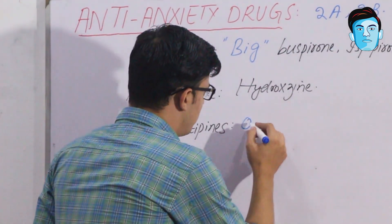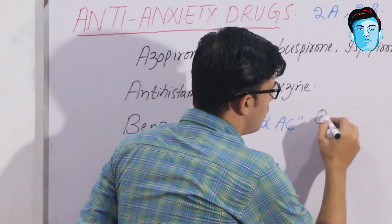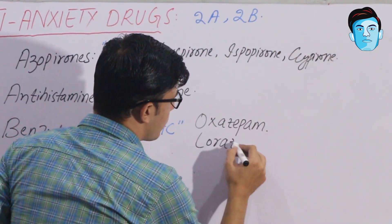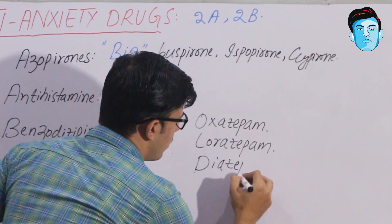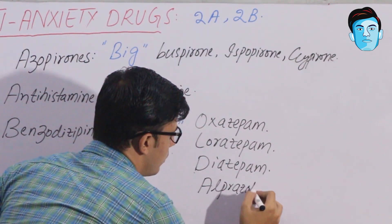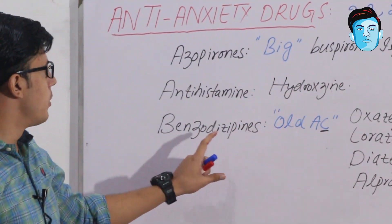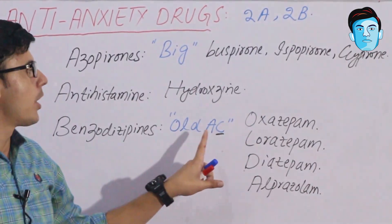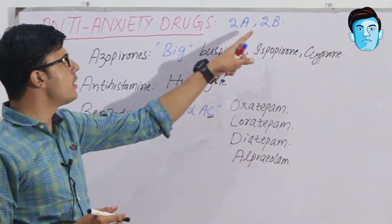In OLD AC: O stands for oxazepam, L stands for lorazepam, D stands for diazepam, and A stands for alprazolam. We are not focusing on C. So the benzodiazepines in this group are oxazepam, lorazepam, diazepam, and alprazolam.